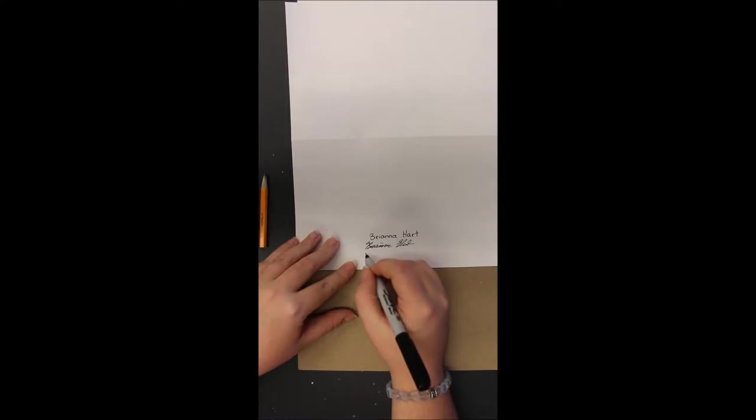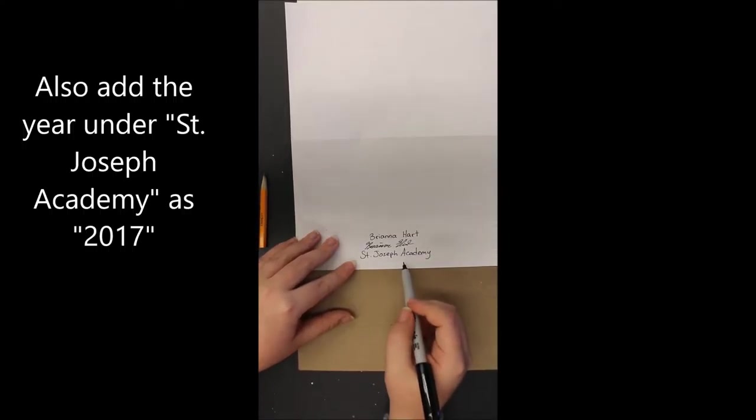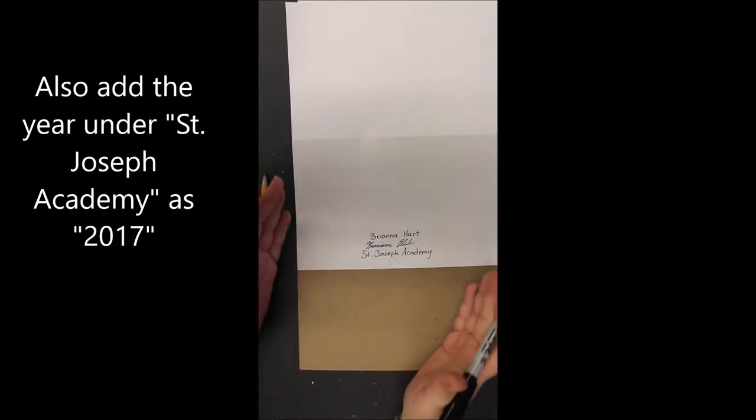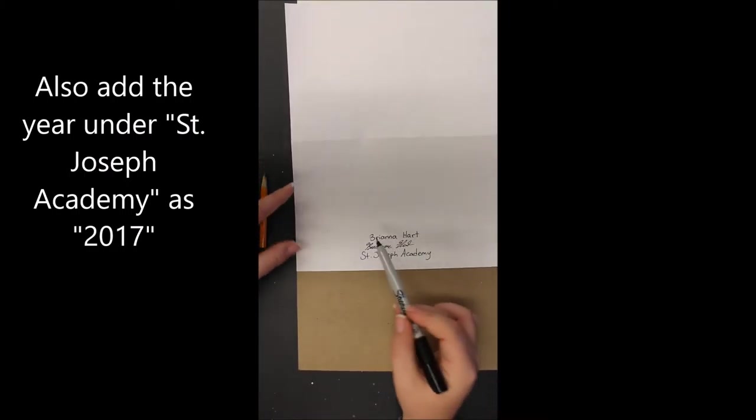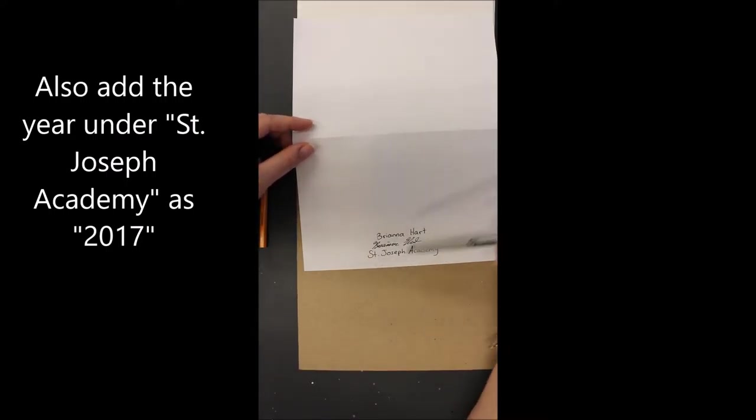Okay, and then you're going to write St. Joseph Academy. We are not St. Joe's, we are not St. Joseph's. Okay, we are St. Joseph Academy. That is our school's name. Please spell it correctly. Please write neatly. Since this is my sideways card, it goes in the middle on the side like that.